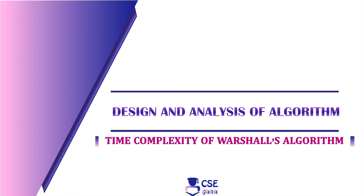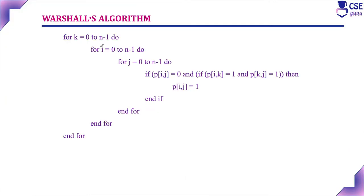Welcome to CSE Guru. The next topic is the time complexity of Warshall's algorithm. This is the Warshall's algorithm. It uses three for loops: K is the outer for loop, I is the inner for loop, and J is the innermost for loop. When all three for loop conditions are true, the if statement will execute once, and this is the main logic of Warshall's algorithm.